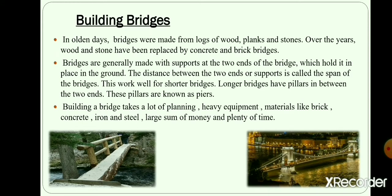The earliest bridges were fallen trees across streams and rivers. These were used by early man to pass from one side to the other in search of food and shelter. The next stage of bridge making involved long slabs of stone placed over large rocks or piles of stones. In many parts of the world, human beings tied ropes of various grasses and hung them as suspension bridges. Materials they used were locally available. Gradually, new materials and advanced techniques were used to make longer and stronger bridges.